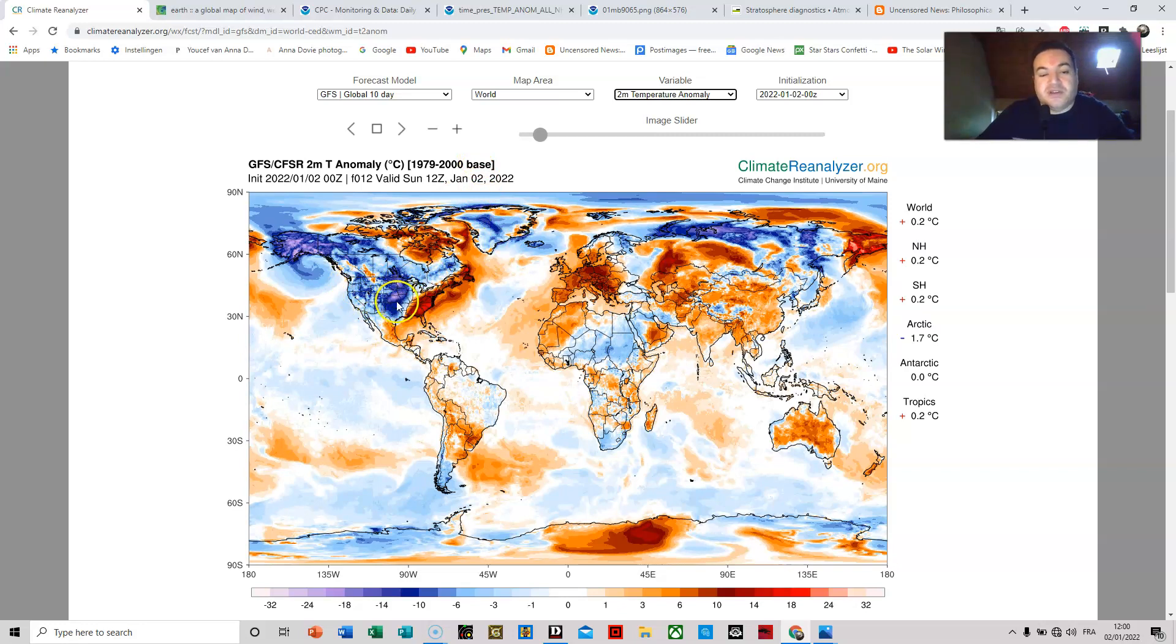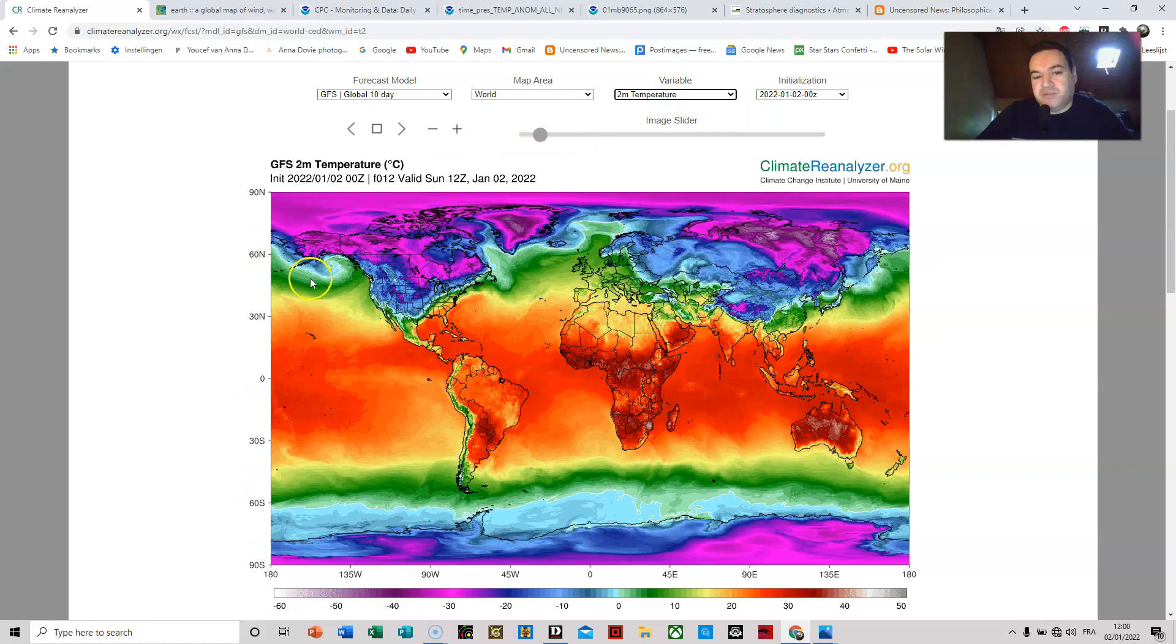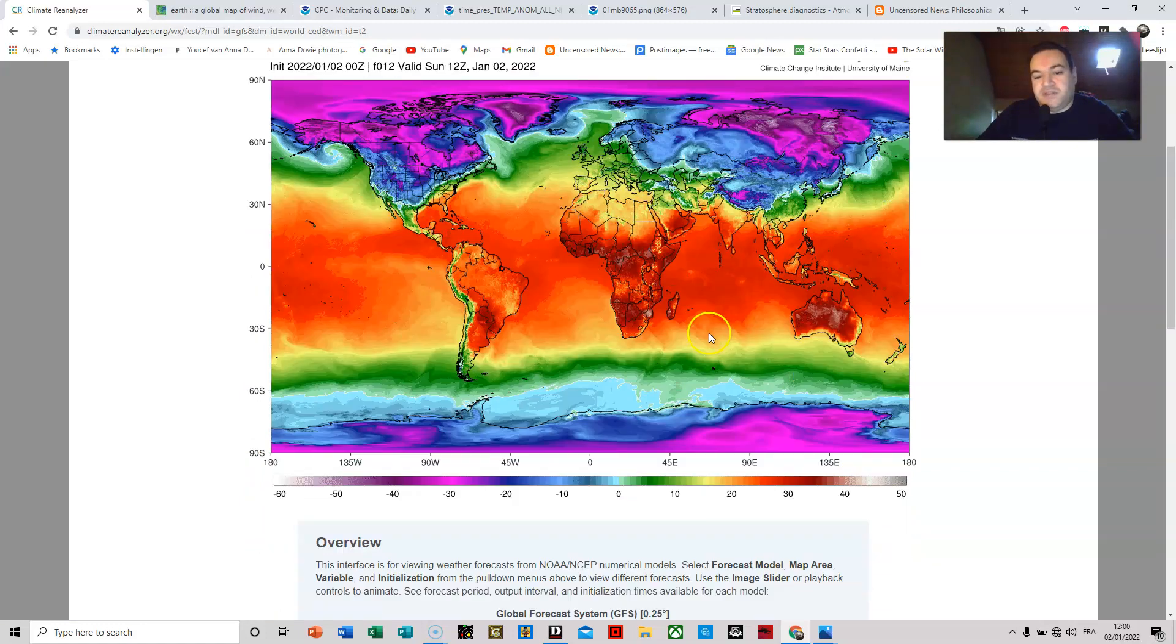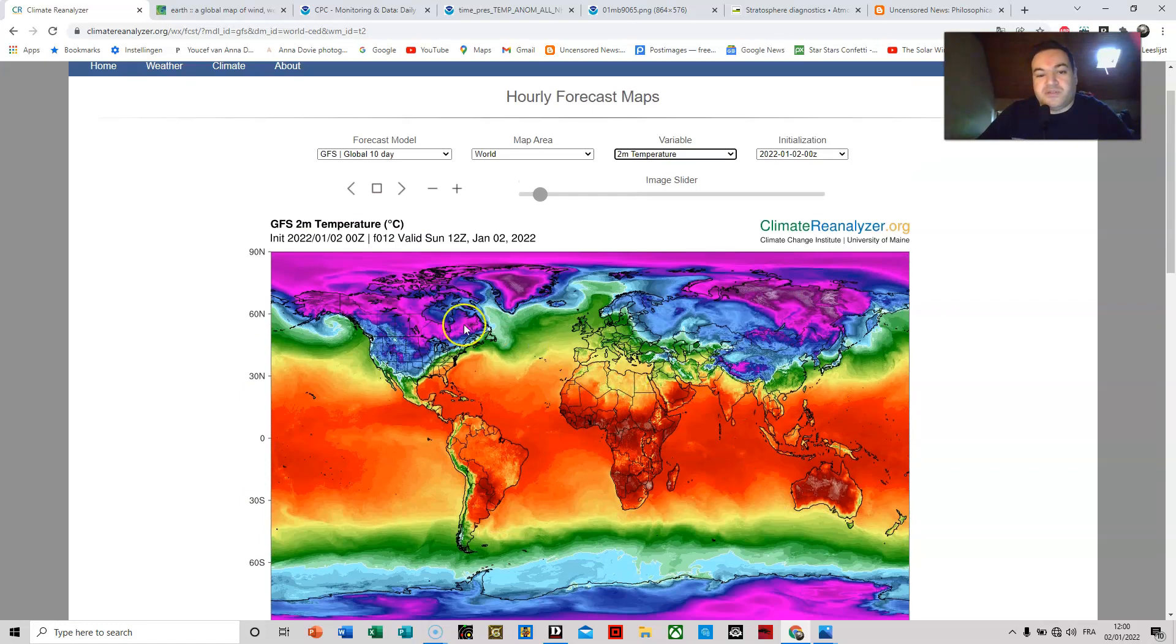So if you live in these particular areas of the United States, beware today especially to put warm clothes on. Because when we look at the actual temperature, this is indeed very cold. Minus 30 is purple. So yeah, I would advise to take care of yourself, put warm clothes on so you don't get sick.